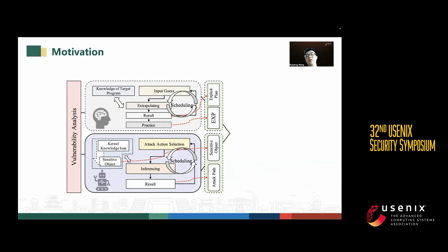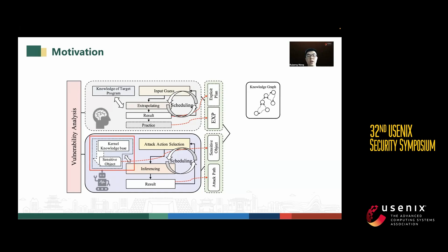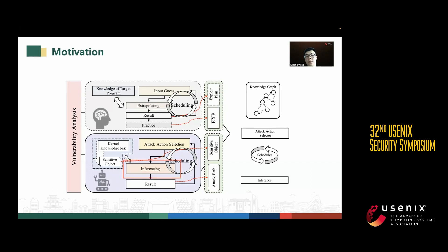To find objects with this characteristic, we analyzed the process of exploit construction by experts. We found that experts like to reverse-analyze the target program and get knowledge about the objects or the target program. Then they will try some operations and infer the effect in the program with all the knowledge learned. If the effect meets their goal, they will finish the operation in practice; if not, they will repeat this process. We can model this process, so we need a knowledge base, attack action selector, scheduler, and inference engine.